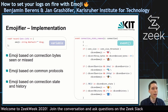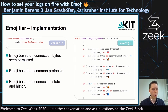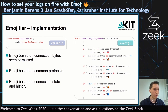We then have the event part with simple if statements: can we see certain properties in the connection? For example, we had a look at connection bytes seen or missed, common protocols, and also added some properties with respect to the history of the connection. It was really fun writing that script.